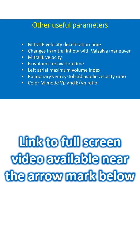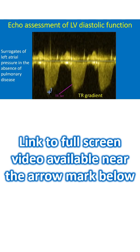Some of the other useful parameters are mitral E velocity deceleration time, changes in mitral inflow with Valsalva maneuver, mitral L velocity, isovolumic relaxation time, left atrial maximum volume index, pulmonary vein systolic by diastolic velocity ratio, mitral color M-mode VP and E by VP ratio. Tricuspid regurgitation jet velocity and pulmonary regurgitation end-diastolic velocity, indicating pulmonary hypertension, are also taken as surrogates of left atrial pressure in the absence of pulmonary disease.